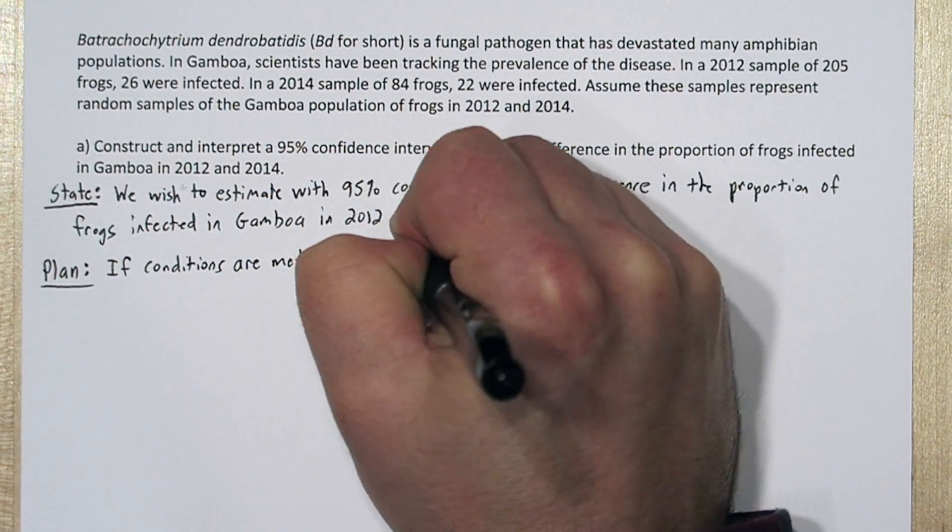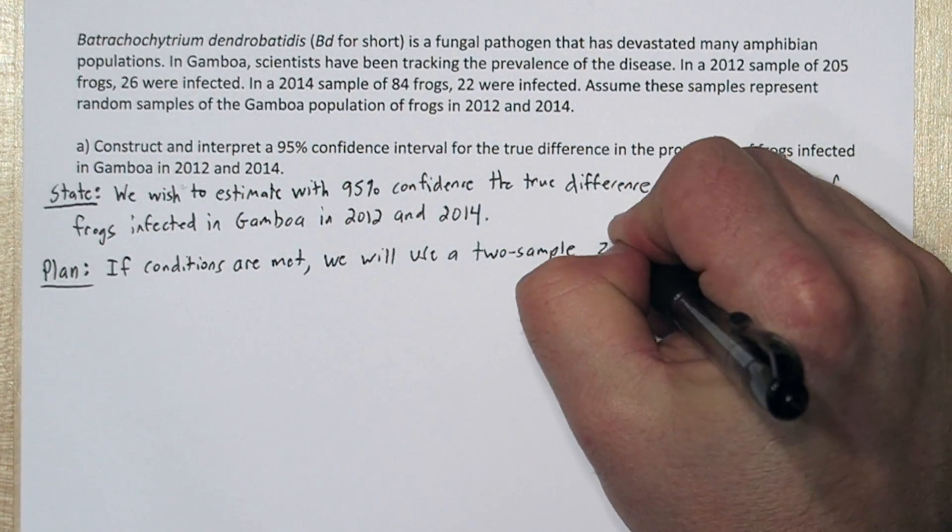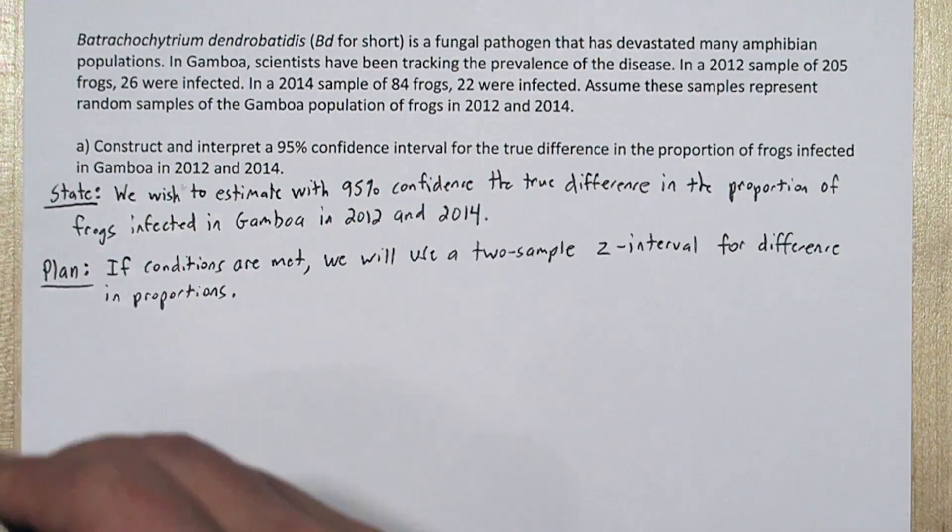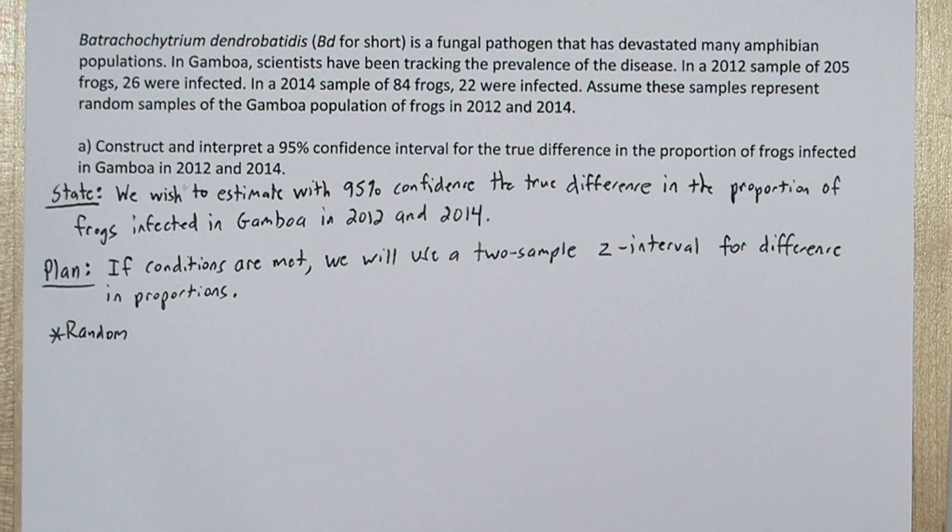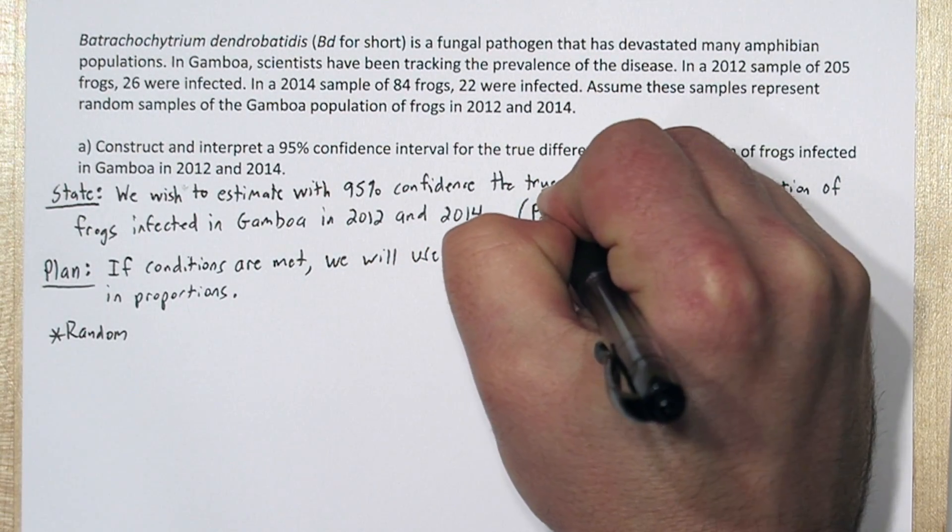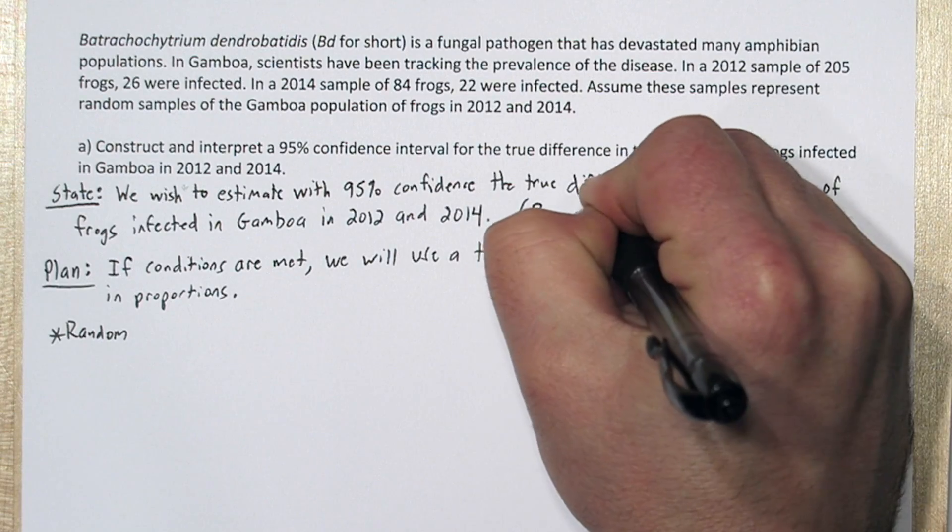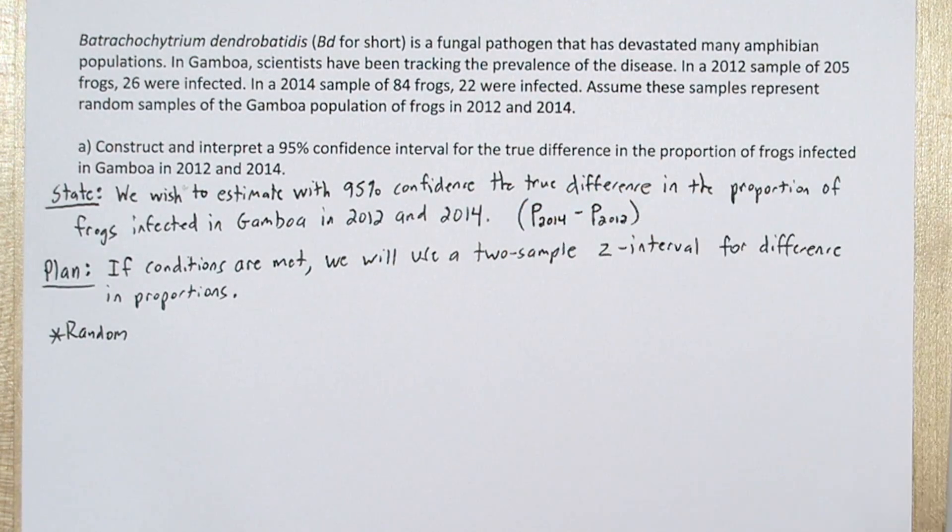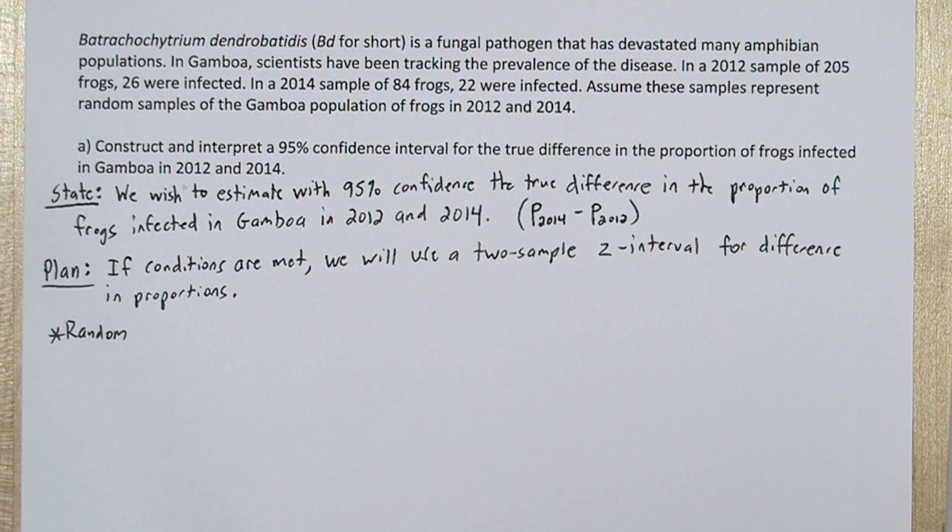In our plan step, we need to check conditions and state our inference method. If conditions are met, we will use a two-sample z interval for difference in proportion. There was a higher infection rate in 2014, so to make our interpretation easier, let's make our difference the proportion infected in 2014 minus the proportion infected in 2012. We can use the notation P sub 2014 minus P sub 2012.